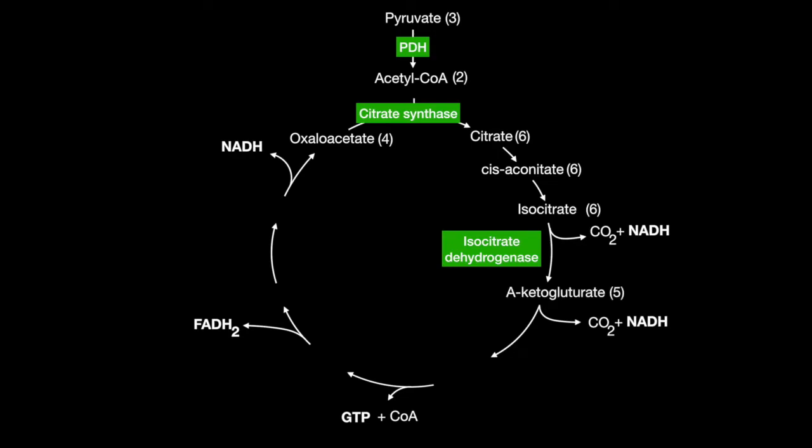The 5-carbon alpha-ketoglutarate is the product, and it too is decarboxylated, and an NADH is produced, creating the 4-carbon succinyl-CoA by alpha-ketoglutarate dehydrogenase.